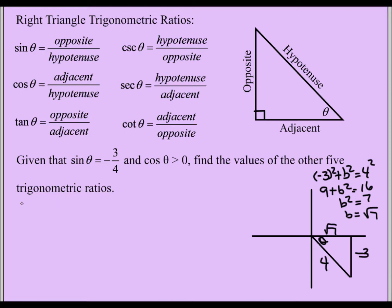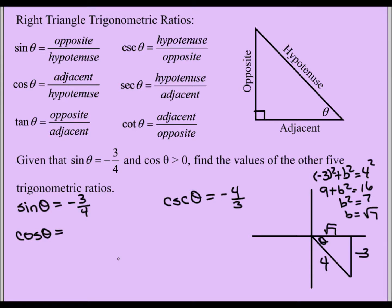Now I have all missing sides. Sine theta is -3/4. Cosecant theta is the reciprocal of sine theta, which is -4/3. Cosine theta is adjacent over hypotenuse: √7 over 4. Secant theta is the reciprocal of cosine theta: 4 over √7. Rationalizing by multiplying top and bottom by √7 gives 4√7/7.